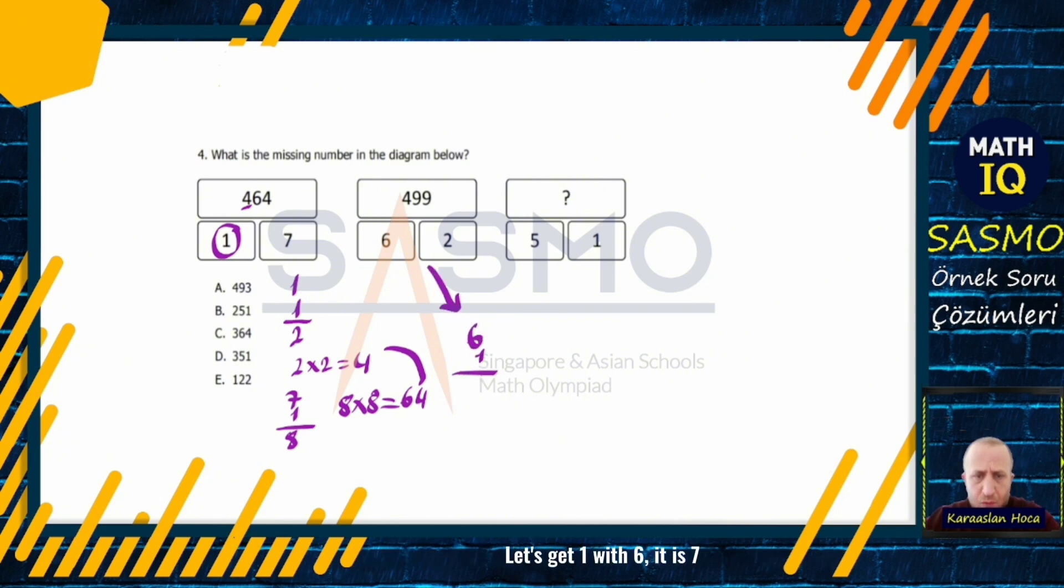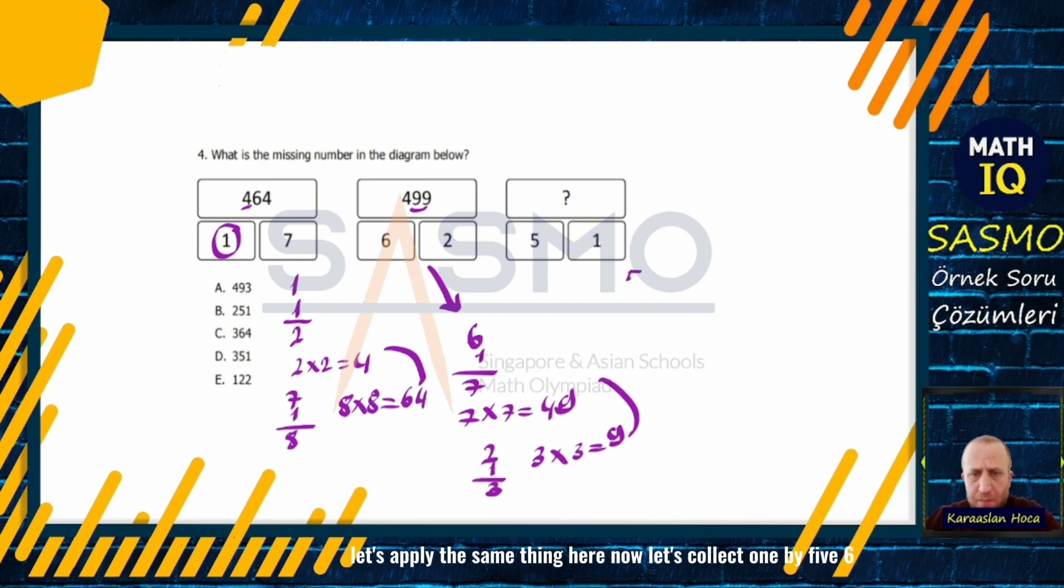Let's get 1 with 6, it is 7. 7 times itself, 49. Yes, we are on the right track. So now let's look at 2. Sum of 2 and 1, 3 times 3 times 3, 9. It was 499. Let's apply the same thing here now. Let's collect 1 by 5, 6. 6 times 6 is 36.